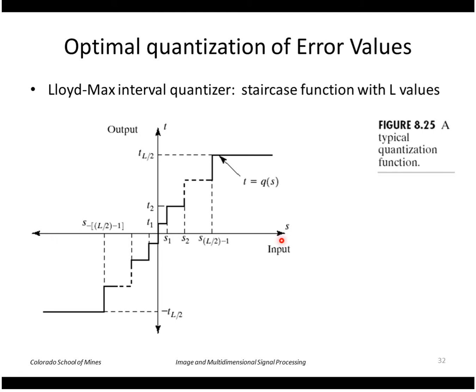So this kind of shows that: here's our input called s, it's a continuous value, and we're going to quantize this into some discrete values of output called t1, t2, up to t sub l over 2. So anything between 0 and s1 is going to be output as a t1. Anything between s1 and s2 is output as a t2, and so forth.